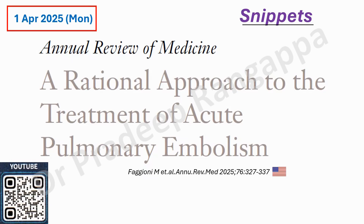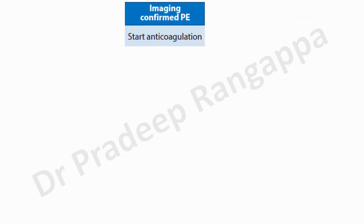I'll take you through this in the next couple of minutes — it's just a snippet. The first step is: once you confirm PE with CTPA, which appears to be the gold standard, one has to start anticoagulation.